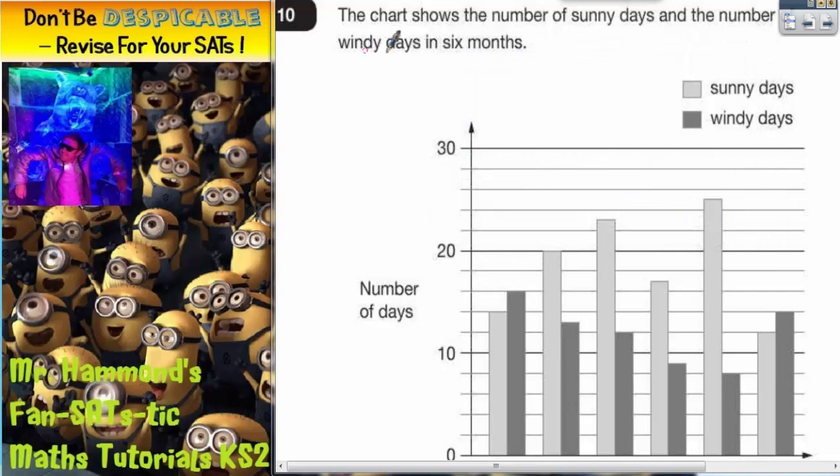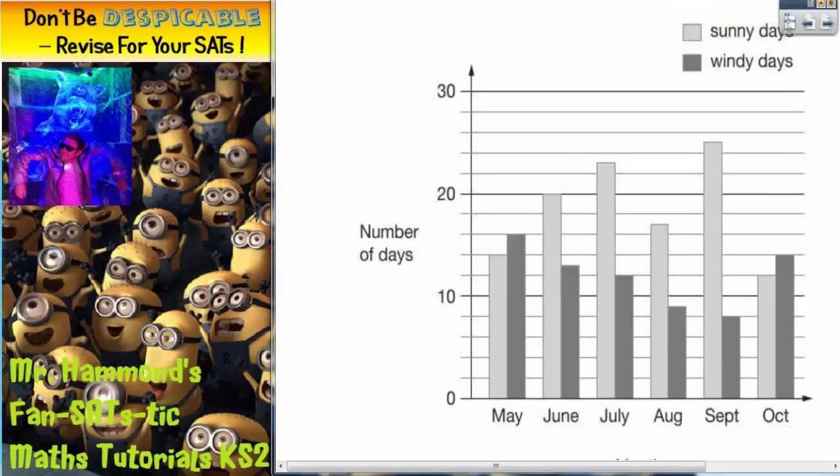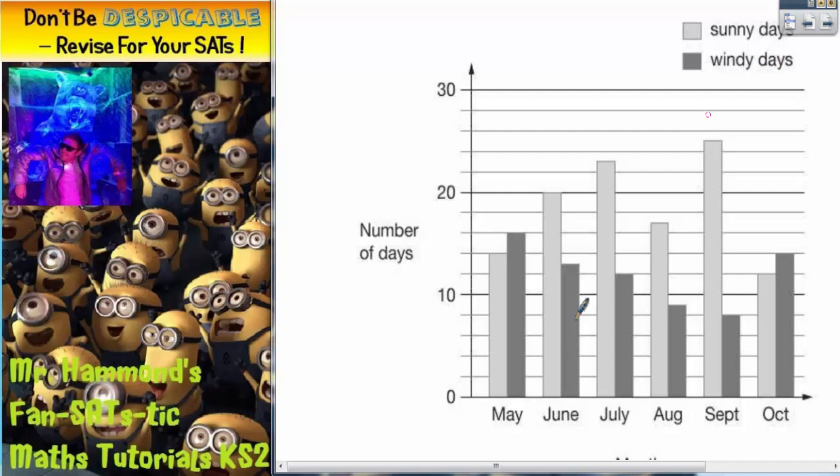Question 10. The chart shows the number of sunny days and the number of windy days in six months. Now the important thing to realize here is that we've got a key. So sunny days are light grey, windy days are dark grey.